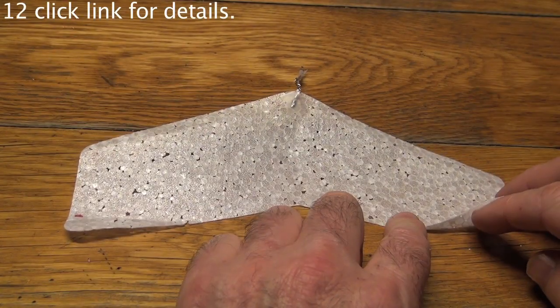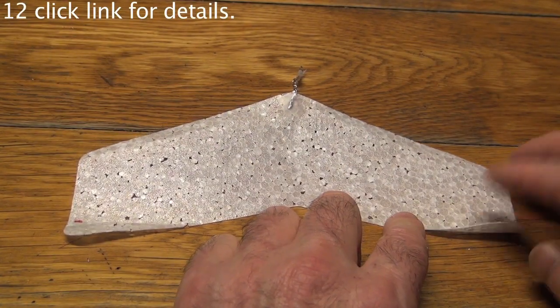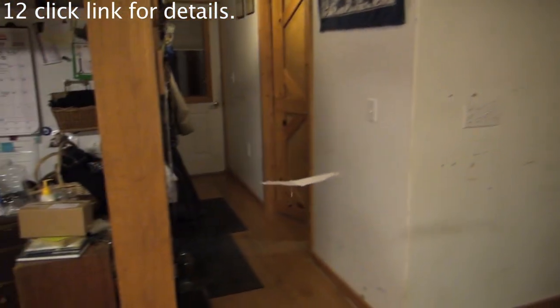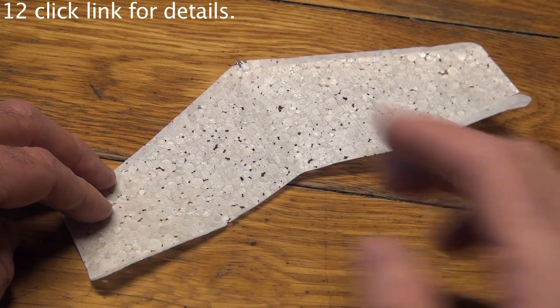If the glider always turns left or right, then bend the opposite side elevon up, but not much more than 45 degrees. If that's not enough, push the other elevon down.